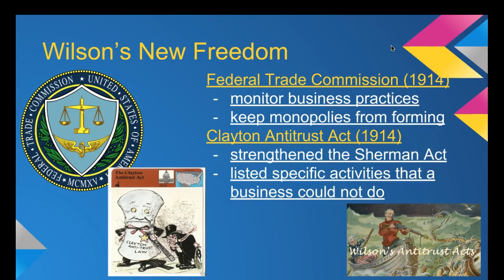Finally, let's talk about how Wilson attacked the trusts. In 1914, the Federal Trade Commission — the FTC — was created. It's an organization that's still around today. What the FTC does is monitor business practices to make sure businesses aren't doing things that would help them create a monopoly or a trust, ensuring that businesses maintain fair practices and aren't taking advantage of people.